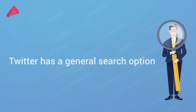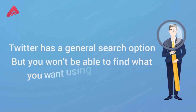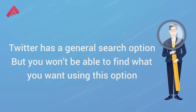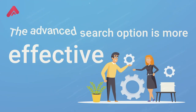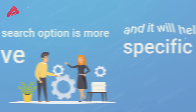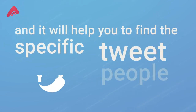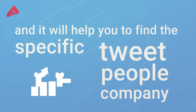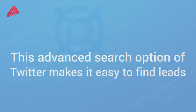Twitter has a general search option, but you won't be able to find what you want using this option. The advanced search option is more effective, and it will help you to find the specific tweet, people, or company you are looking for. This advanced search option of Twitter makes it easy to find leads.